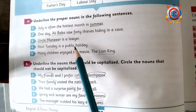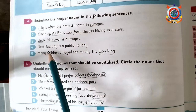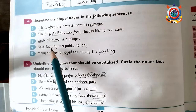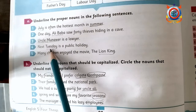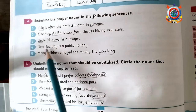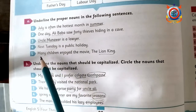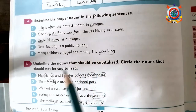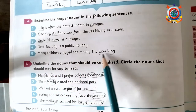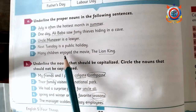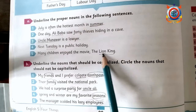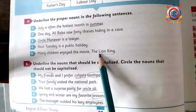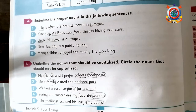Next sentence: 'Tuesday is a public holiday.' Tuesday is a proper noun because the days of the week are also proper nouns, so Tuesday is underlined — correct. Last sentence: 'Many children enjoyed the movie The Lion King.' The Lion King is the name of a movie, so it is a proper noun and Lion King should be underlined.